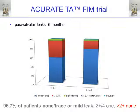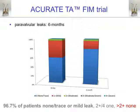Regarding paravalvular leaks — which has been mentioned several times at this meeting as a real issue — any patient exhibiting a leak greater than 2-plus has a higher risk for mortality. We are therefore quite pleased to see that at six-month follow-up, 96.7% of patients demonstrated either none, trace, or only mild leak on echo follow-up. In other words, only one patient had a moderate leak, and greater than 2-plus was not present in any of these patients.